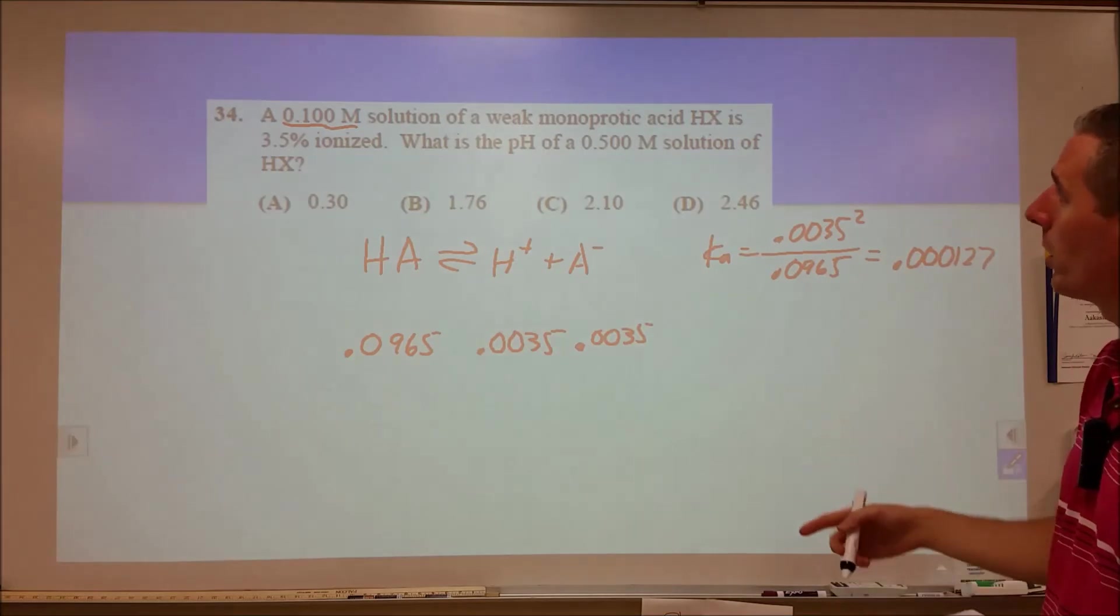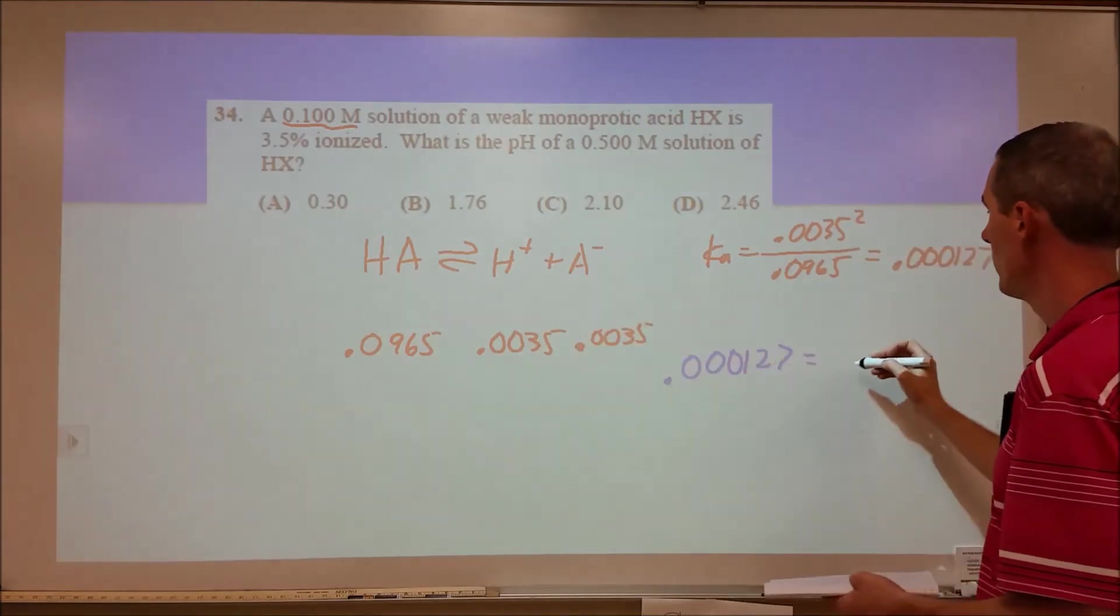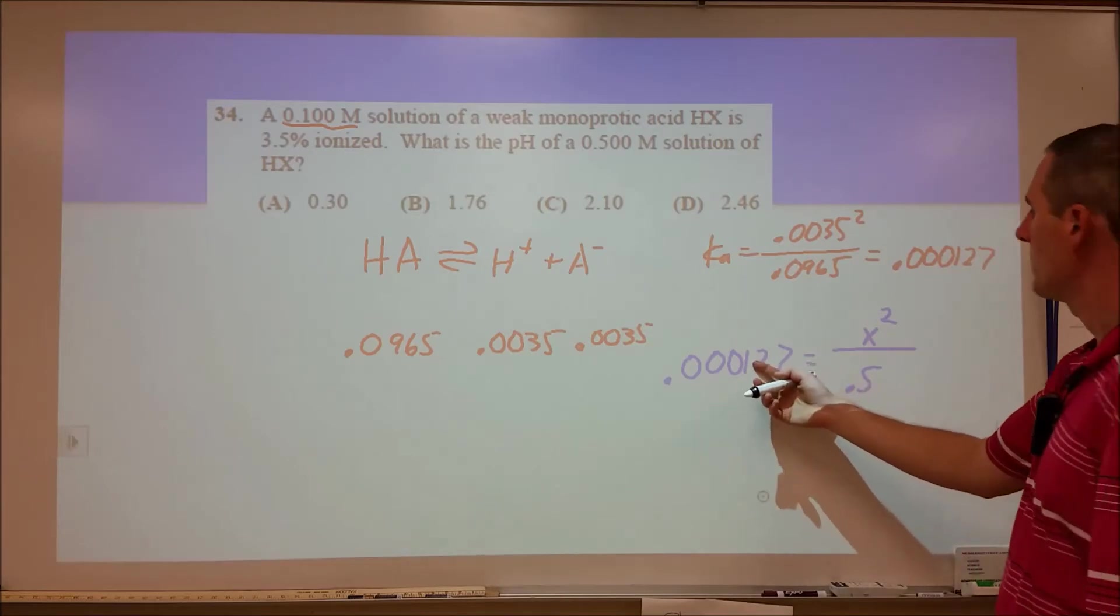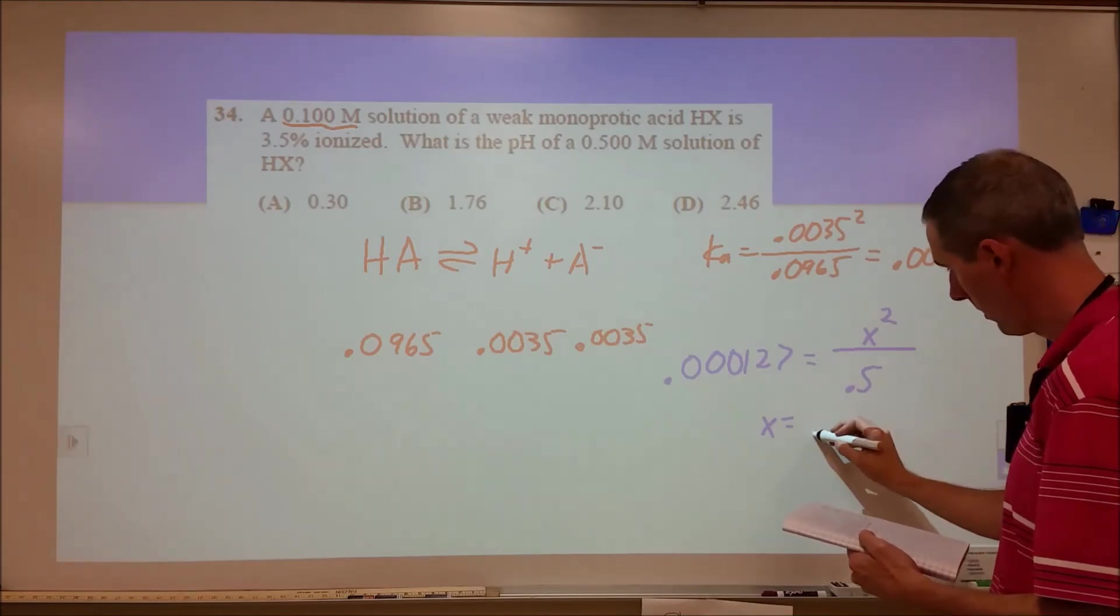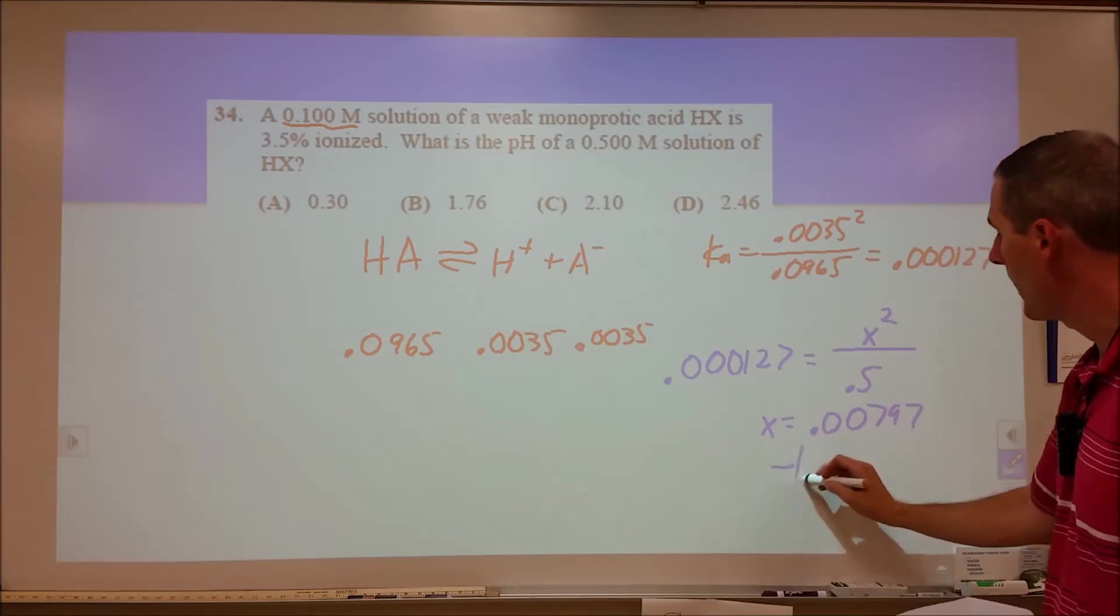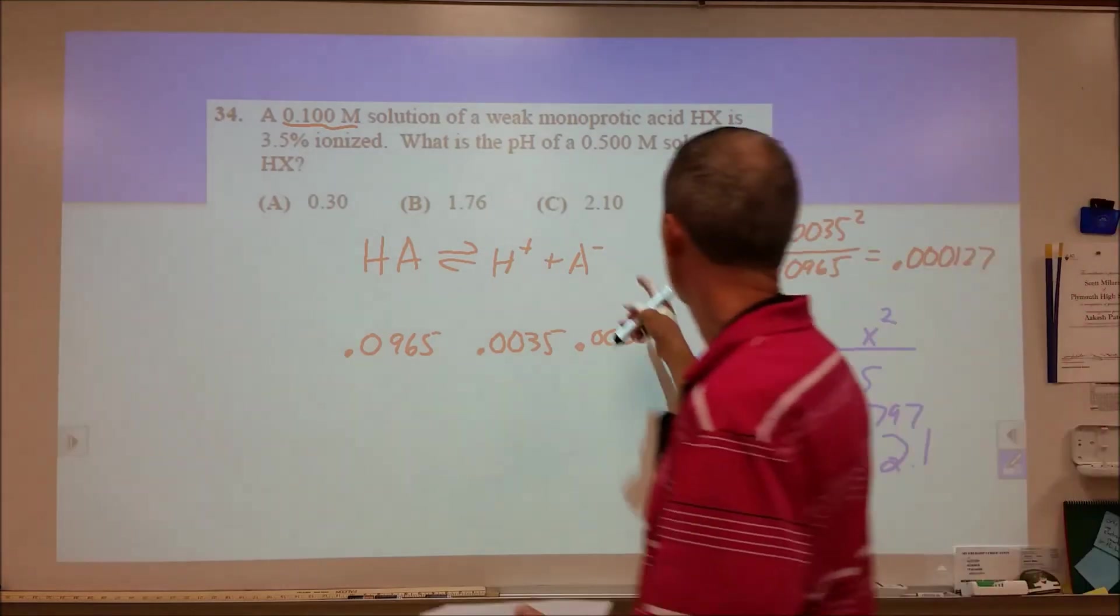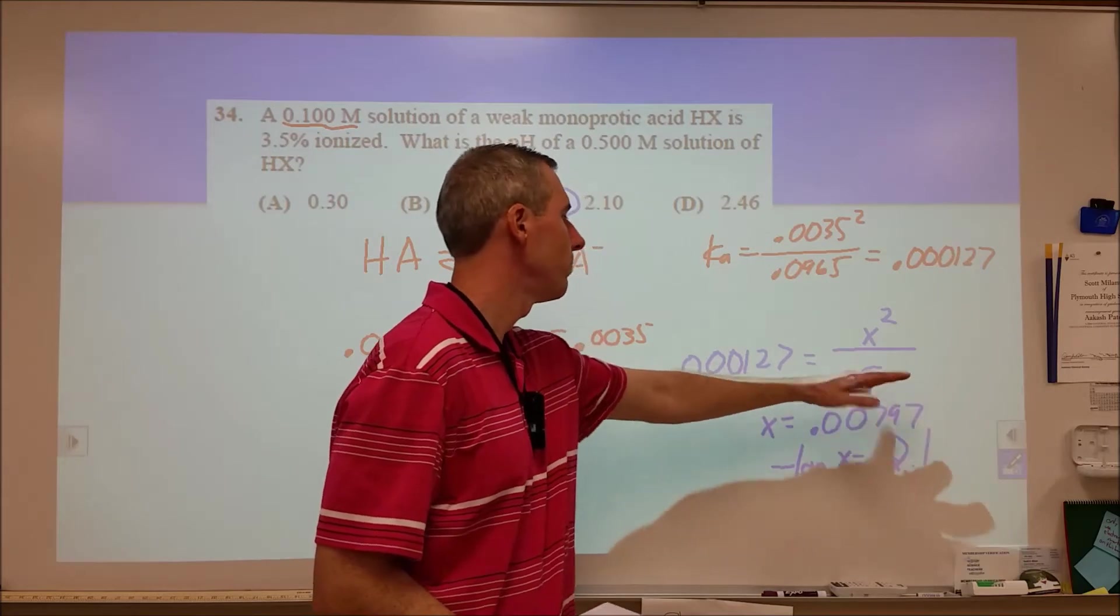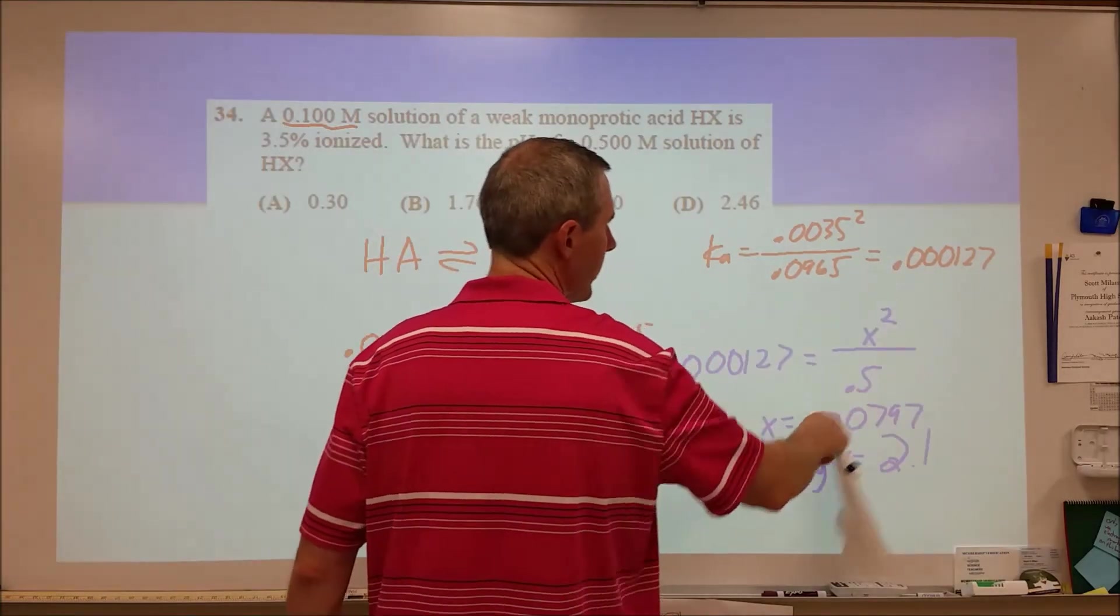Now we want to take that K and go, okay, what about a 0.5 molar solution? So if we have 0.000127 and we start with 0.5 molar, we're going to end up with X squared over 0.5 minus X. Let's ignore X and see if that works. So 0.5 times this, square root that, and we get an X value of 0.00797. That is our concentration of H+ at equilibrium. Take the negative log of that, and that comes up to be 2.1. Now we want to look. We've got 2.1, 2.4, 1.7. So I would stop at that point. You could go back and make sure you didn't need to ignore the X, but there's nothing close enough to really warrant that in this case.